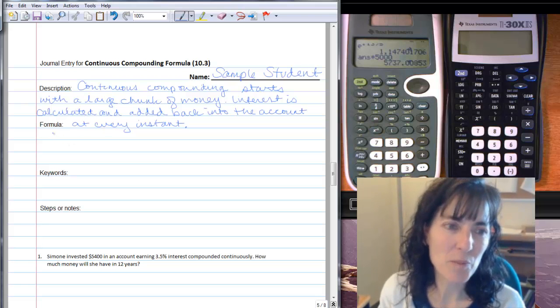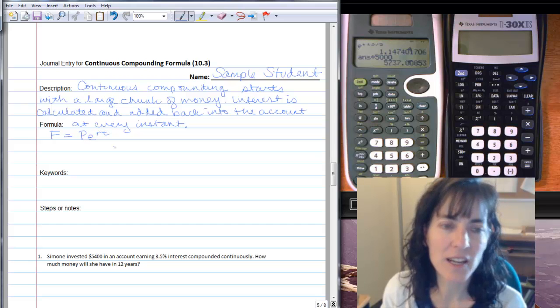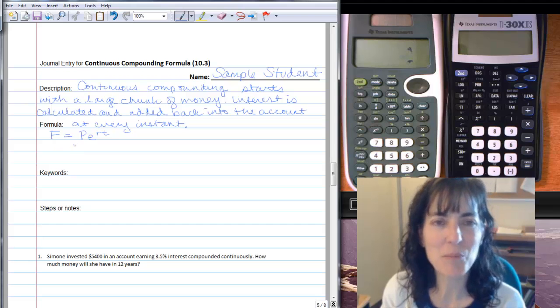Okay, so the formula is F equals PE to the RT. And you can think of that as PERT. That helps some people remember it. So this is the PERT formula.